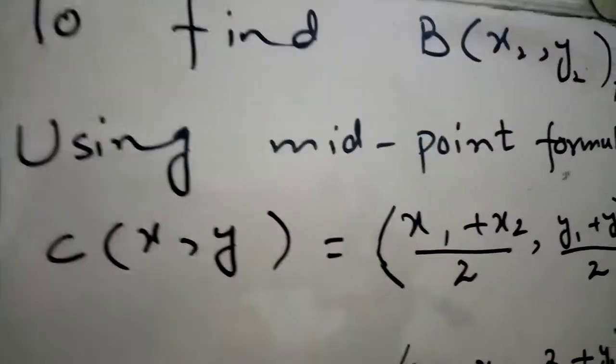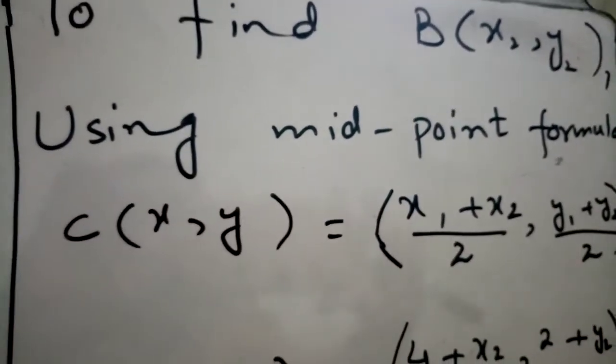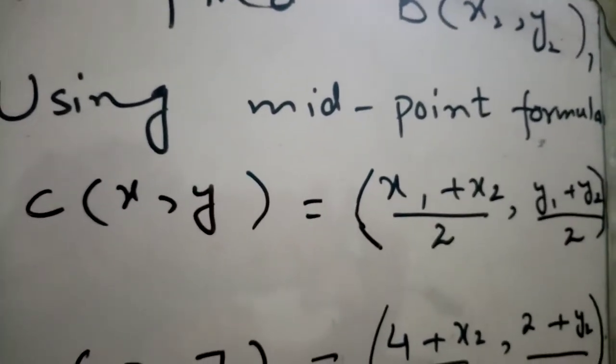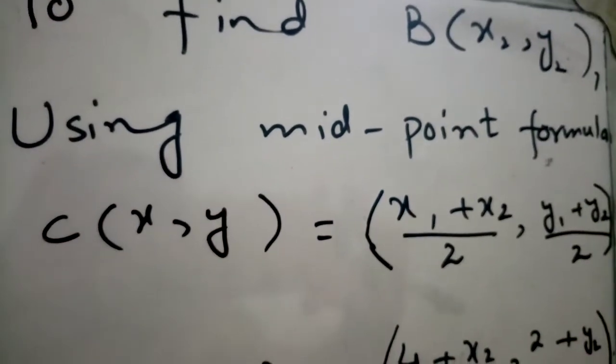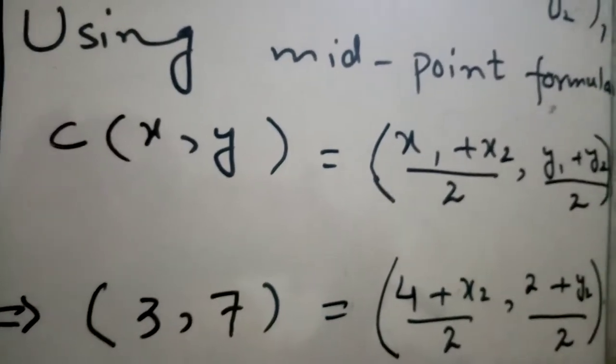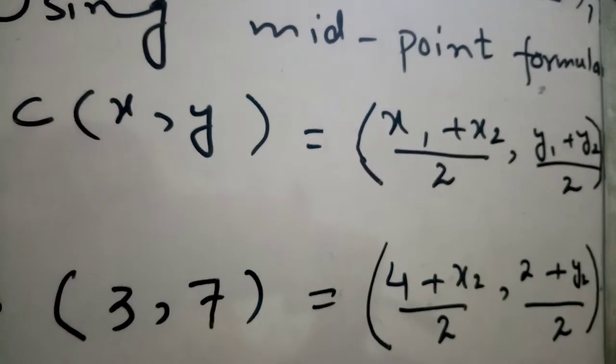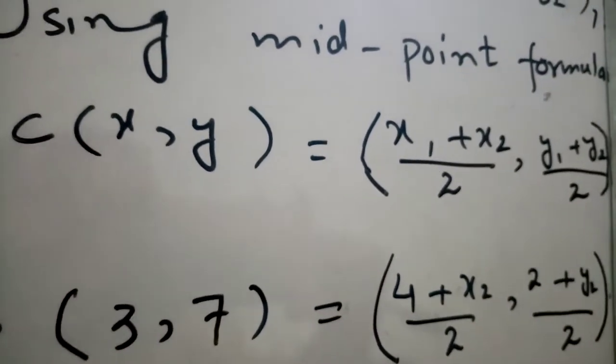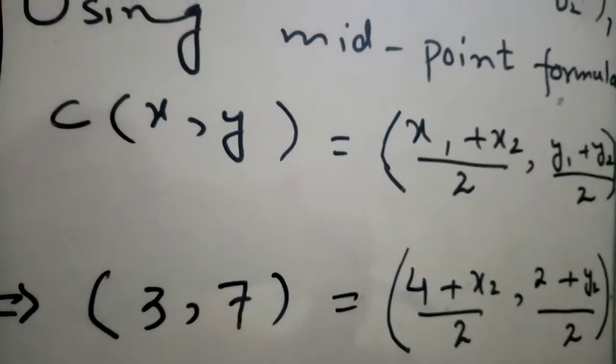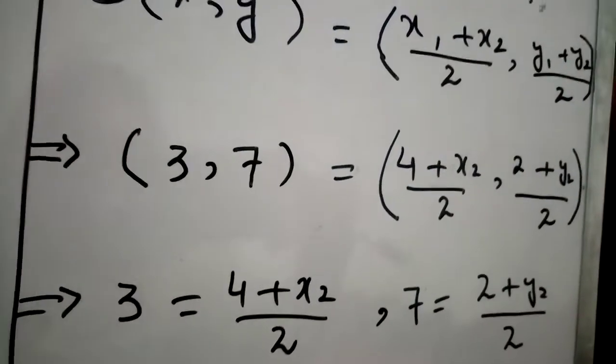Using midpoint formula. What is the midpoint formula? C(x,y) equals ((x₁+x₂)/2, (y₁+y₂)/2). Which implies, putting the value of C(x,y) which equals (3,7), also putting the values of x₁ and y₁ from point A, we will get (3,7) = ((4+x₂)/2, (2+y₂)/2).